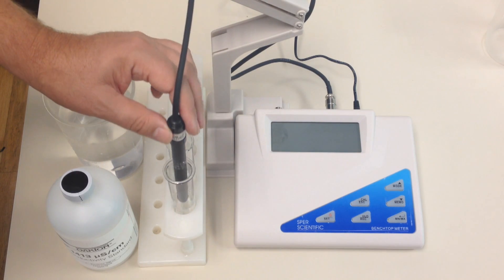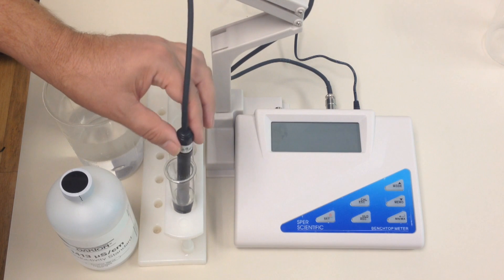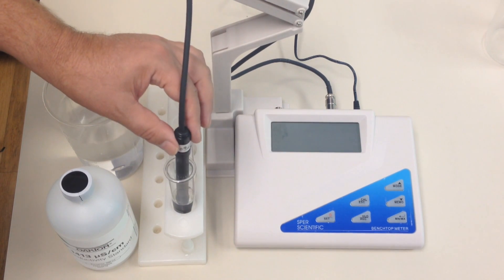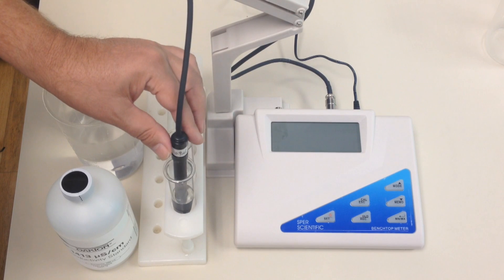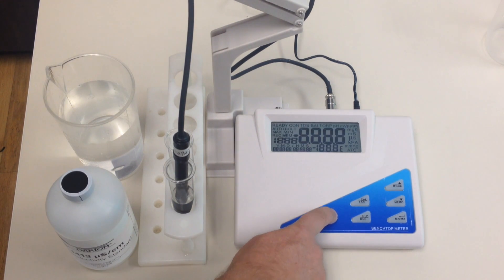Put it into the second beaker. This is the one you're actually going to be calibrating from, and here you have to make sure you get all the air bubbles out of the probe. Let the probe stabilize for a little bit, and at this time, and only at this time, do you actually turn on the meter. So now I'm going to go ahead and turn on the meter.